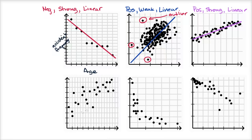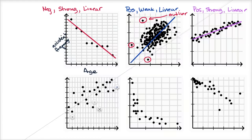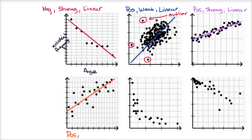Now let's look at this data right over here. It looks like I can fit a line, and it looks like it's a positive relationship — the line would be upward sloping. You can use computers and other methods to find a more precise line that minimizes the collective distance to all of the points, but it looks like there is a positive, weak linear relationship, because you have a lot of points that are far off the line. So I would call this a positive, weak, linear relationship. And there are a lot of outliers here — this one over here is pretty far out.